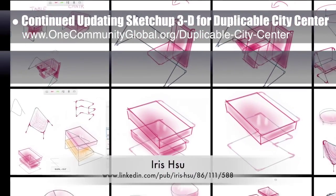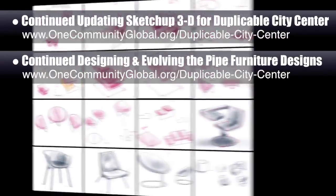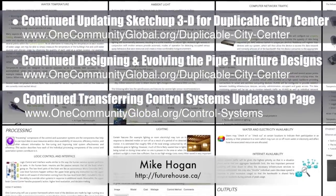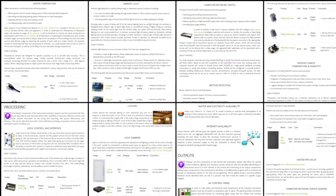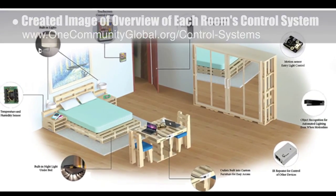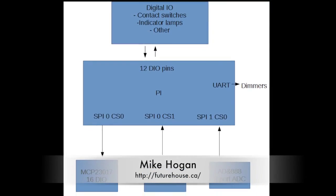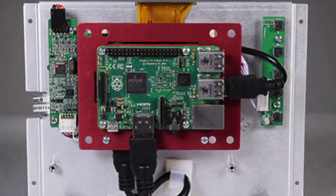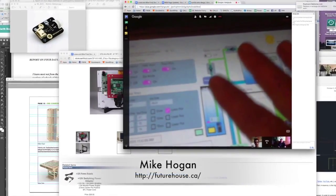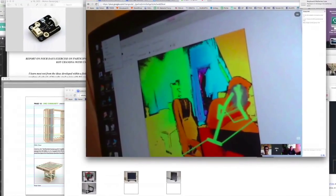Iris Sue, industrial designer, continued designing and evolving the pipe furniture designs. What you see here are the third-generation concept designs for the chairs and tables for the duplicable city center library. We also continued transferring and editing updates from Mike Hogan, automation systems developer and business systems consultant, to the control systems automation page — about 60% complete with the total page redesign — including a new header image showing each room's control systems. Behind the scenes, Lucas Tutsui da Silva, fourth-year computer engineering student working under Mike's guidance, continued developing the control systems connector board — a Raspberry Pi 2 and Arduino cross-wired board. Mike also began testing new touchscreen hardware and 3D object recognition hardware, shown on our website with a video demonstrating why this is some of the most cutting-edge technology in the world right now.